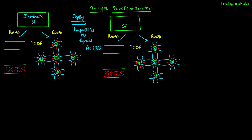Now we will see what happens to these two models because of this doping. As we have added arsenic, one of the silicon atoms in this crystal structure is getting substituted by the arsenic atom. We call this substitutional doping.